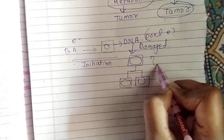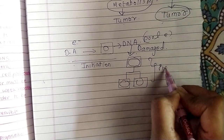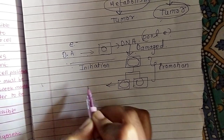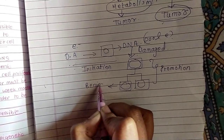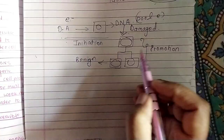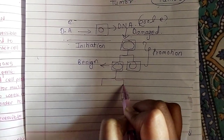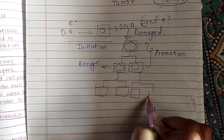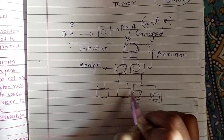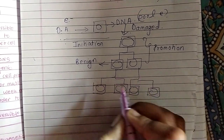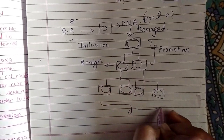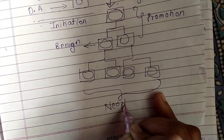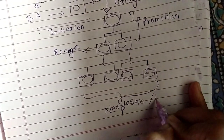This next part is promotion. Once the daughter cells have become benign, they turn to malignancies — they keep on dividing. The cells that are formed are the tumor cells; they are the neoplastic or malignant cells.